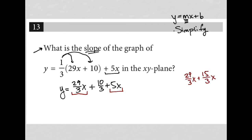Now that I have a common denominator, I can add these two fractions together by adding the numerators and keeping the denominator of 3. 29 plus 15 is 44, so it becomes 44/3 x. Therefore, my new slope-intercept form is y = 44/3 x + 10/3.